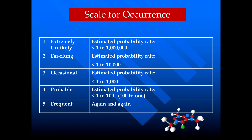How to rate the occurrence? If occurrence is very low or extremely unlikely, we rate it as 1. If it is very frequent — meaning occurrence is again and again — we rate it as 5.